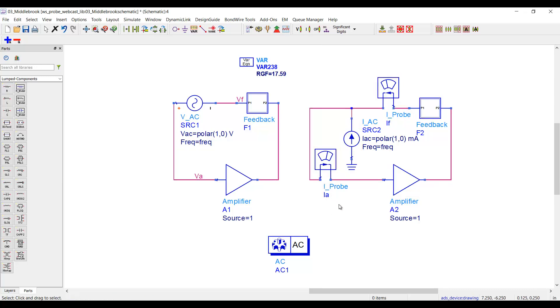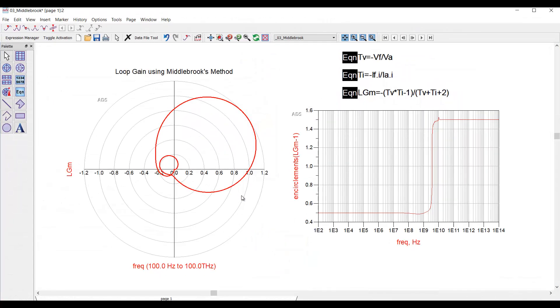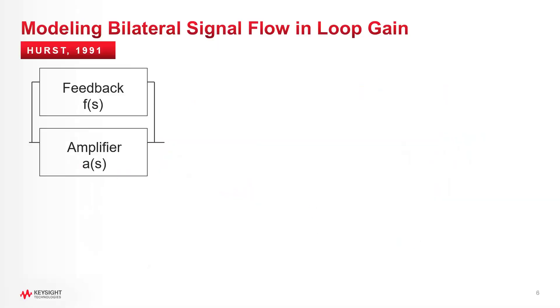And then I'll simulate to get the return voltage and return current. Now, in the data display, I can combine them into a single loop gain that is identical to Middlebrook's measurement. And from it, you can see the circuit appears now unstable in contradiction with the earlier result we got from OstTest.